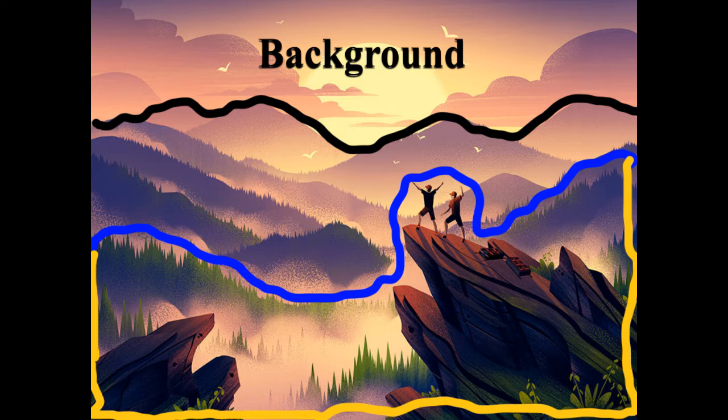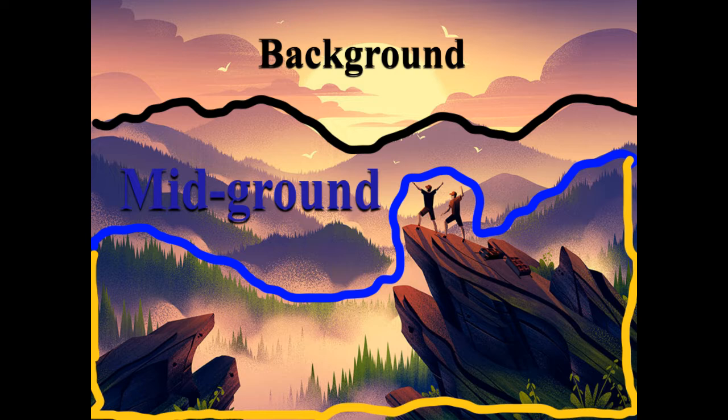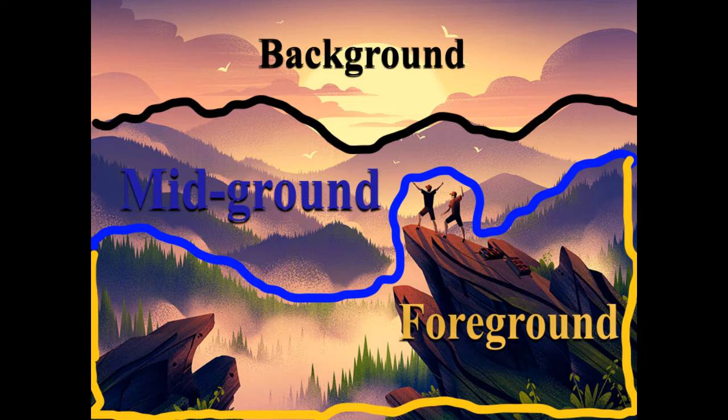The middle ground is in the middle and it usually has the mountains in this picture. And the foreground is in the front. It looks like it's closest to us and has the people and the rocks.